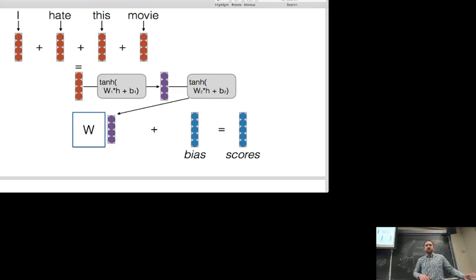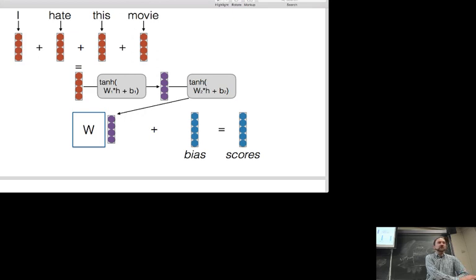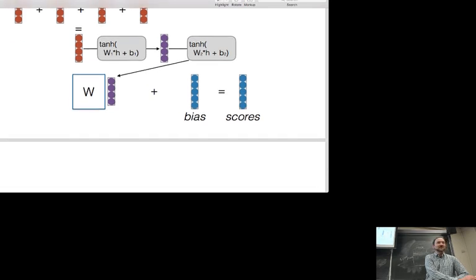One of the issues with NLP is how do you do batching? I'm going to talk about that in a lot of detail in two or three classes. In many cases you don't even need to worry about it — if you're running a task on the Stanford Sentiment Treebank, it's relatively small and you don't need to worry about batching. But for larger datasets you do, and that's actually one of the harder parts of implementing models for NLP.